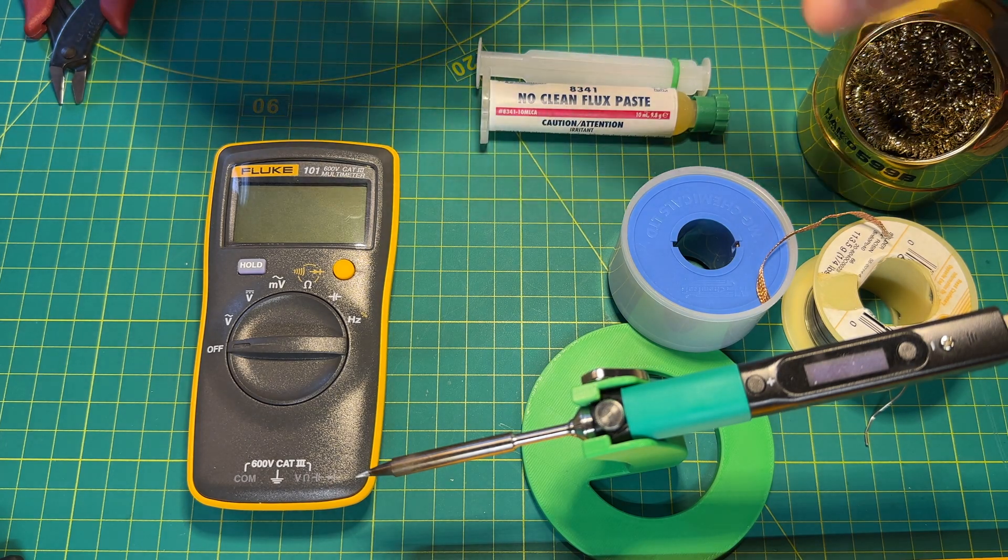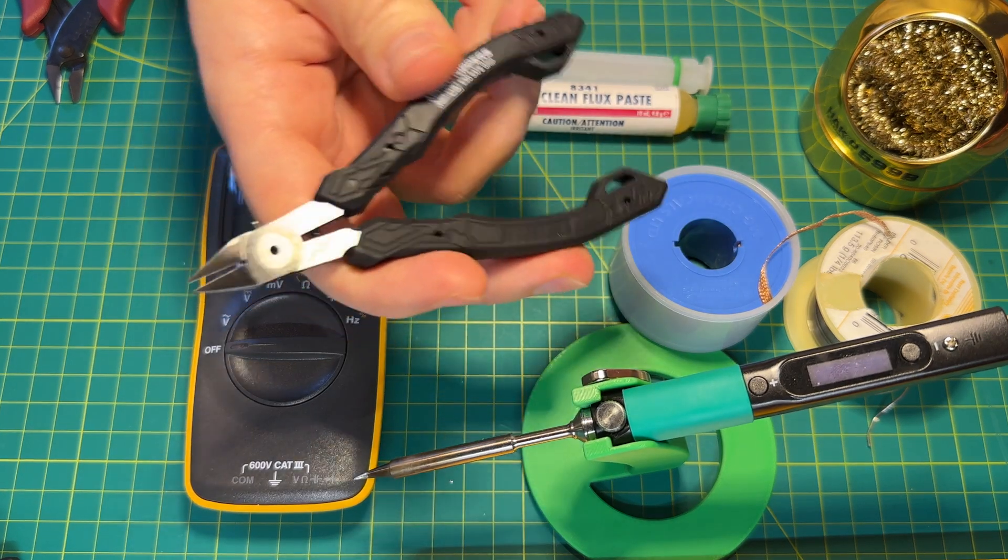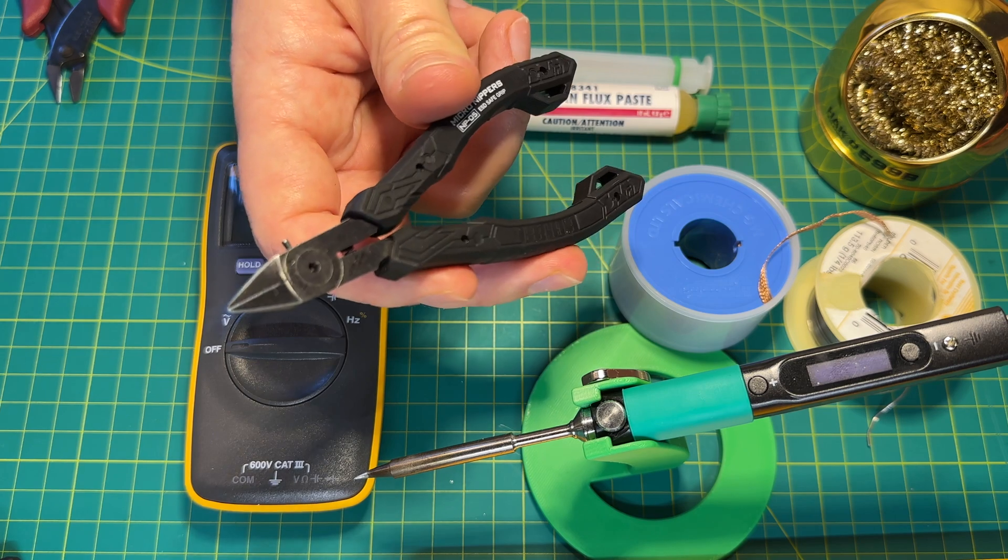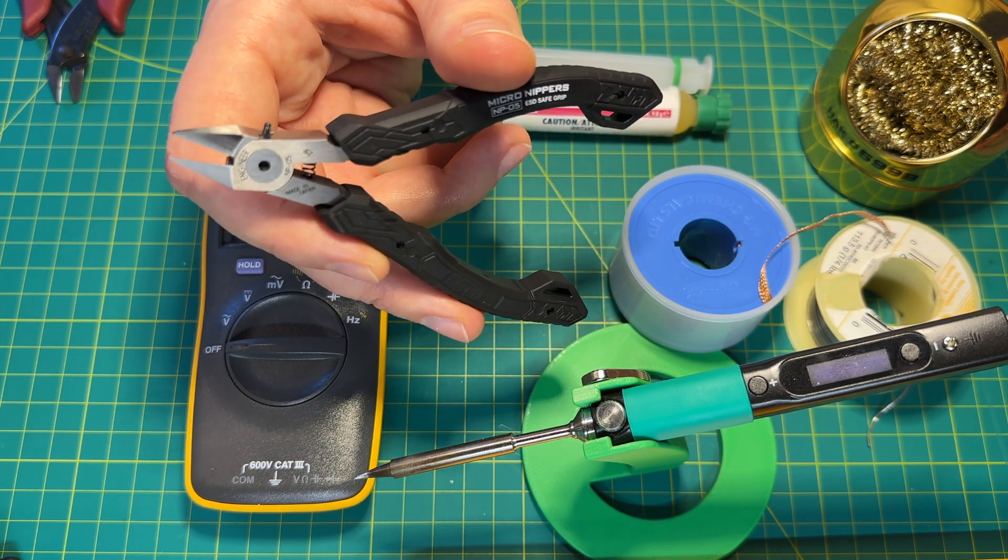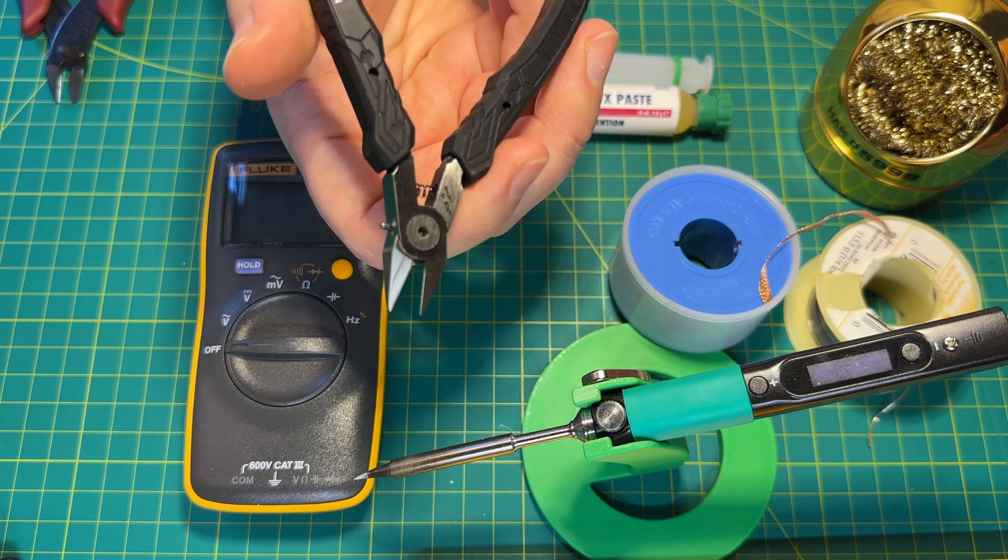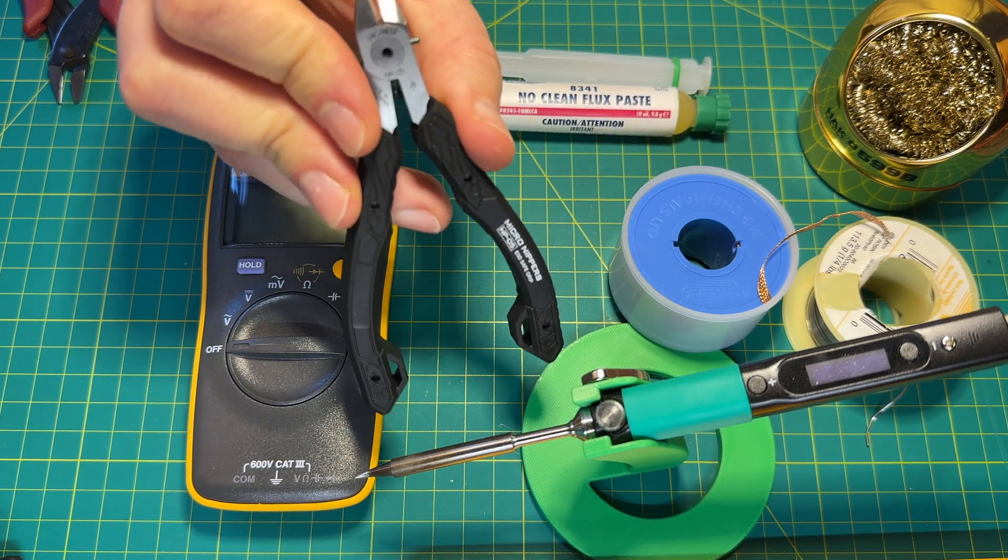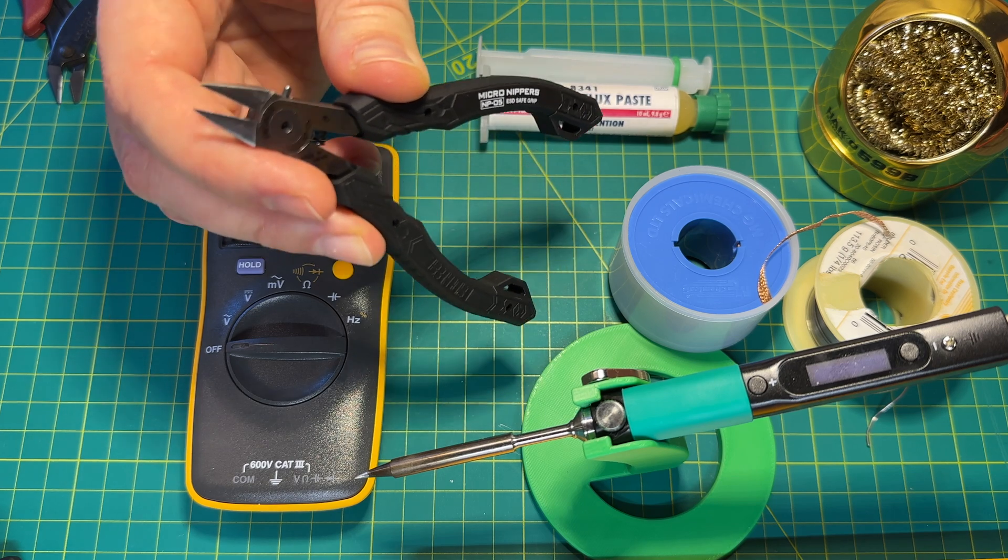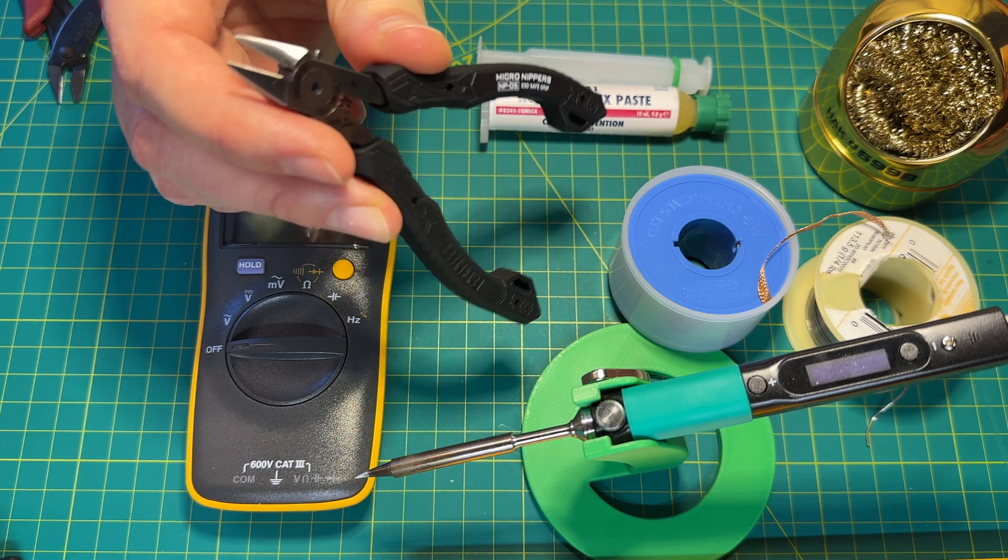Another very important tool you will need is nippers or side cutters. Here you have two options. If you buy a good quality brand, such as Engineer, this is a Japanese brand, very high quality. You probably won't need to buy a new one for the next 10 or 15 years.